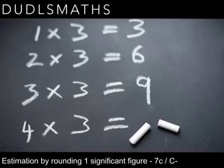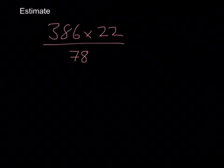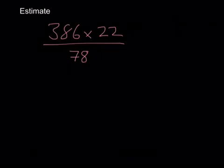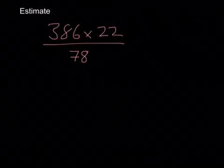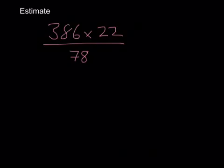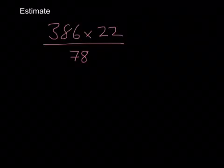In this video we're going to have a look at estimating values by rounding to one significant figure. Here we have a question: 386 times 22 divided by 78. I wouldn't expect you to be able to do this quickly without some kind of method for long multiplication and long division. However, we're asked to estimate it, not work out the exact value. When we're estimating, we make the numbers nice for ourselves so we can do them quickly.